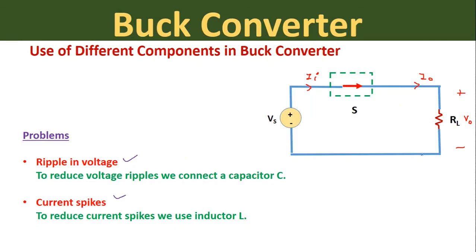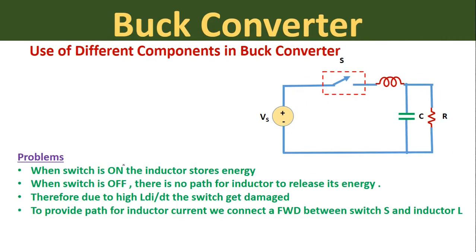To reduce the voltage ripple, we connect a capacitor across the load RL. To reduce the current spikes, we connect an inductor in series with switch S. The capacitor opposes the change of voltage through it, so the voltage ripple is limited. The inductor opposes the change of current through it, so the current spikes are limited. After connecting the capacitor across the load and inductor in series with the switch, when the switch is in the ON condition, the inductor L stores energy. When the switch goes into the OFF condition, the circuit acts as open circuit.